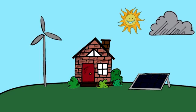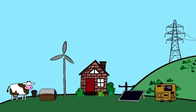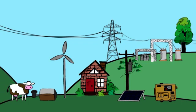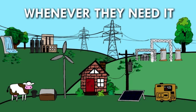Some days the sun doesn't shine. Some days the wind doesn't blow. By remaining connected to the electric grid and the steady supply of reliable power, consumers have access to the electricity they need whenever they need it.